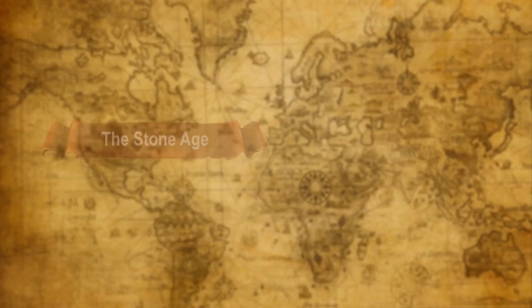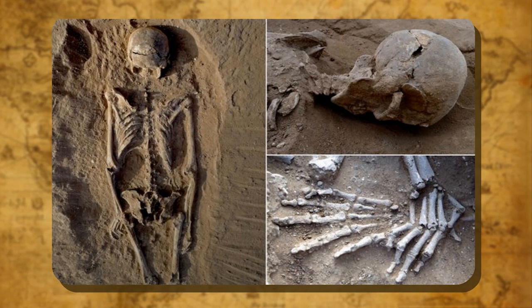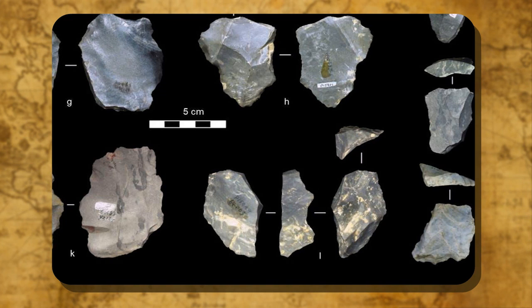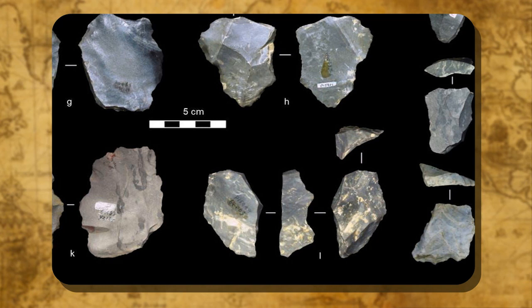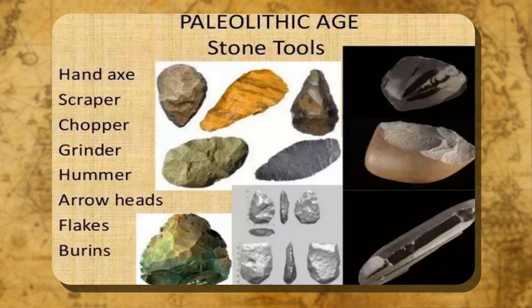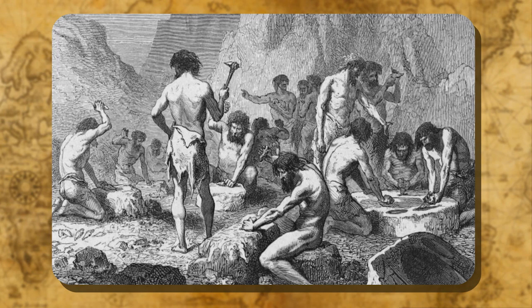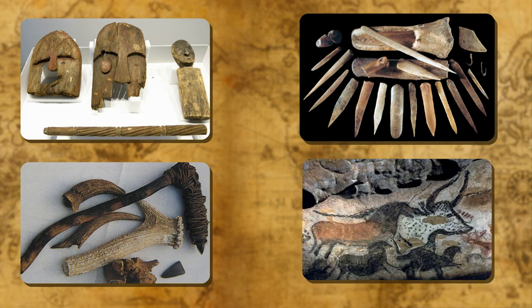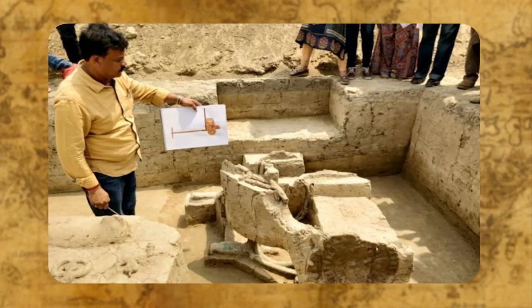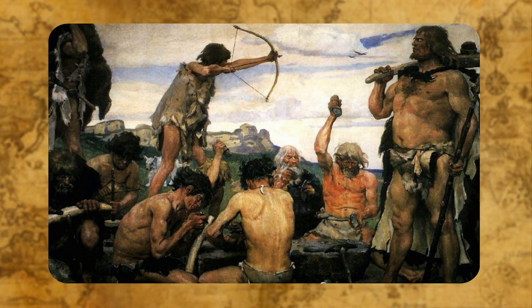The Stone Age. The remains of human beings have been found in India dating to a period nearly 5 lakh years ago. The study of these ancient evidences of human activity in India reveals the use of stone implements. This age when man used stones to make weapons and tools is called the Stone Age. Since the Stone Age was a period before humans learned to write, our knowledge of this period comes from artifacts, bone tools, weapons, cave paintings and pottery. These remains are unearthed and studied by archaeologists. The Stone Age is further divided into 4 categories according to the quality of stone tools used.